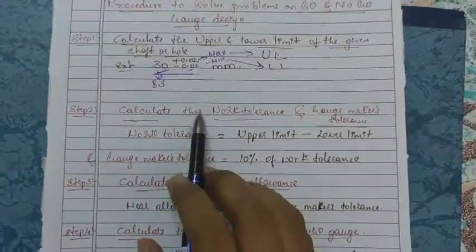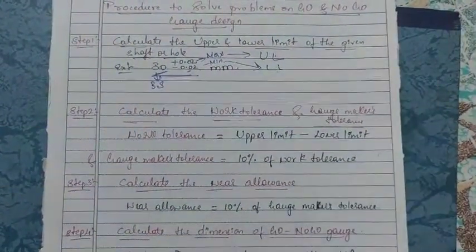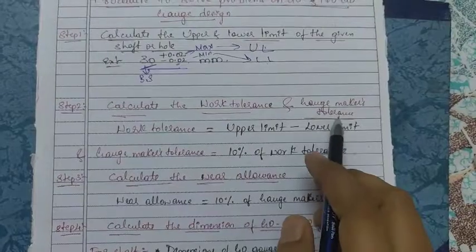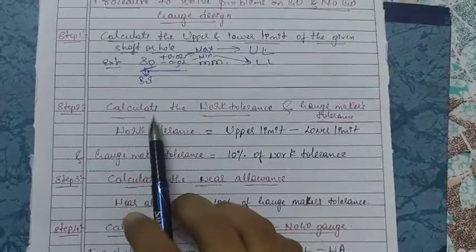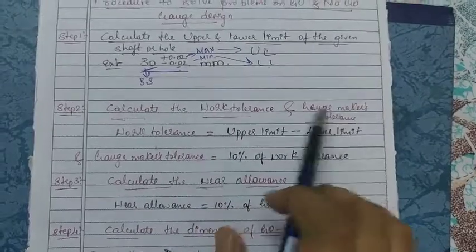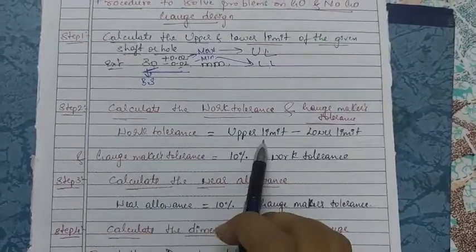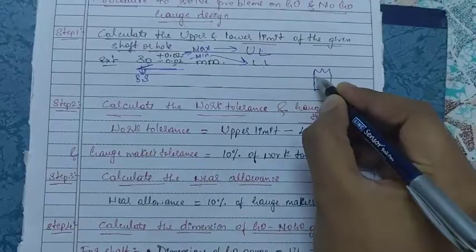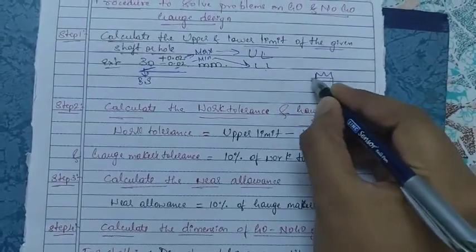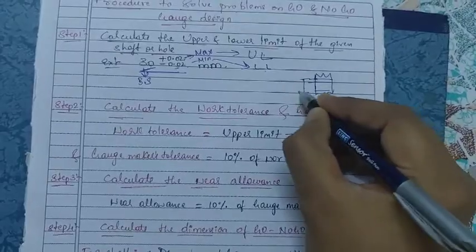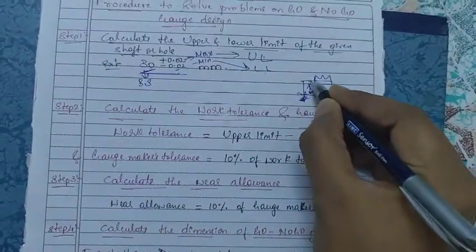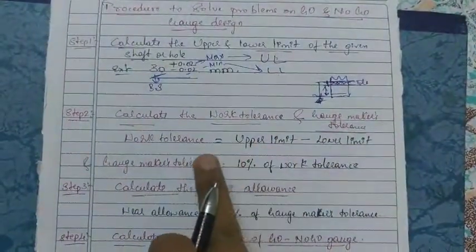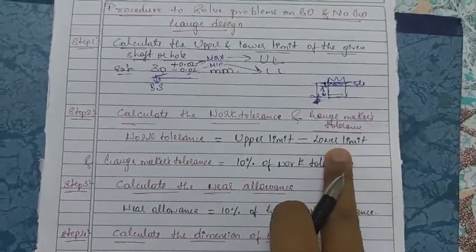In Step 2, we calculate the work tolerance and the gauge maker tolerance. The work tolerance formula is: work tolerance = upper limit minus lower limit. For example, in a hole diagram, the maximum limit is at the top and the minimum at the bottom, and the shaded part between them represents the tolerance.